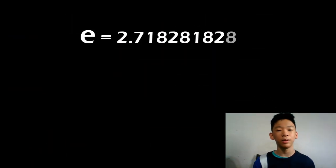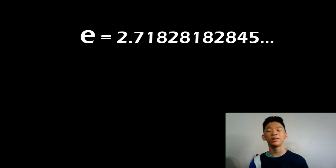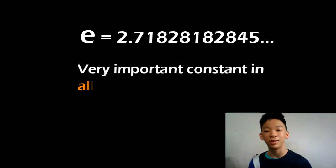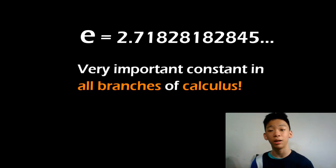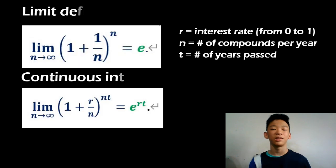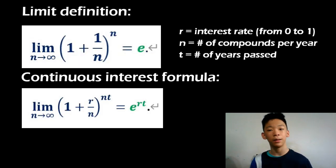The constant e is considered the most natural constant because it shows up a lot in calculus problems regarding the rate of change. For instance, continuous interest requires the use of e.